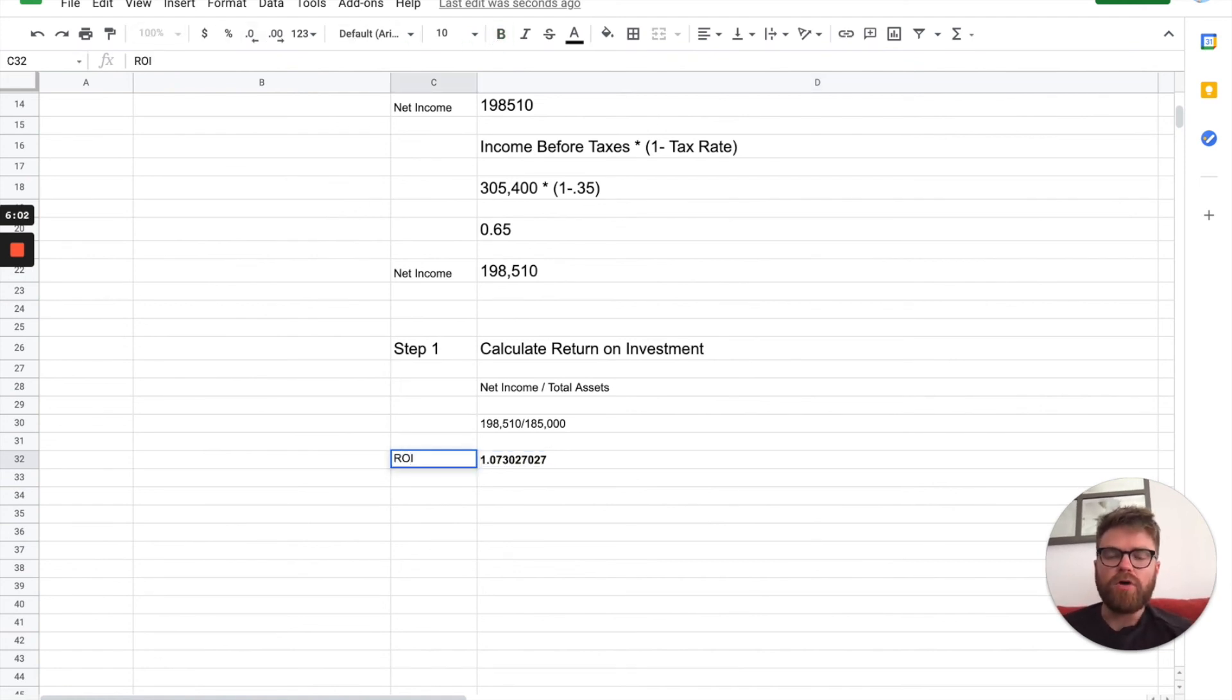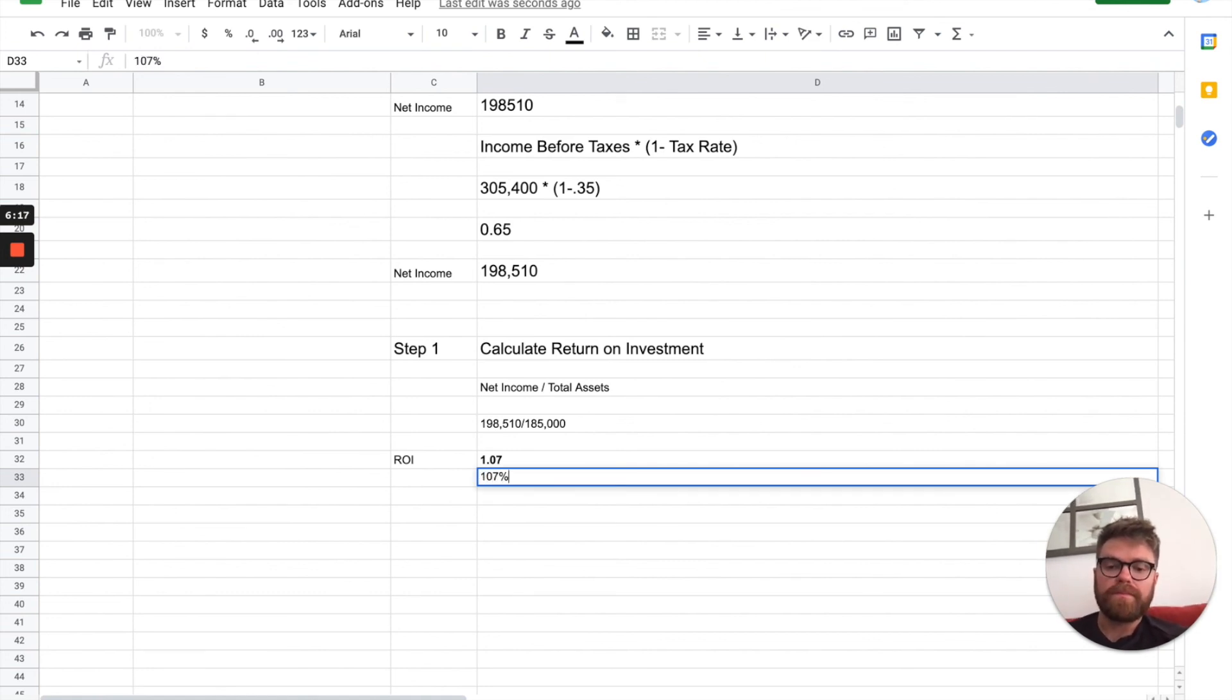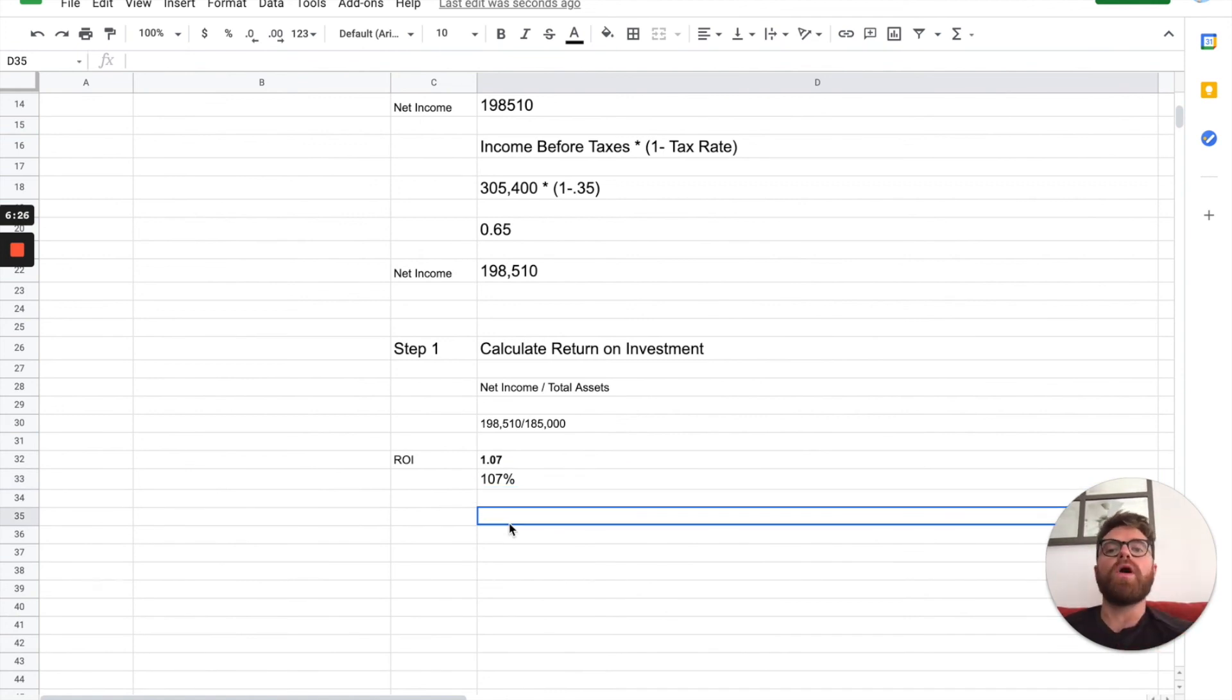That is your ROI, or return on investment. 1.07302, et cetera. We can even shorten it down further. Just call it 1.07. Now, another way to write this is 107% as well. And so, here's the key. This number is over 1, which is what we want. That means you're getting more back than you're putting in.